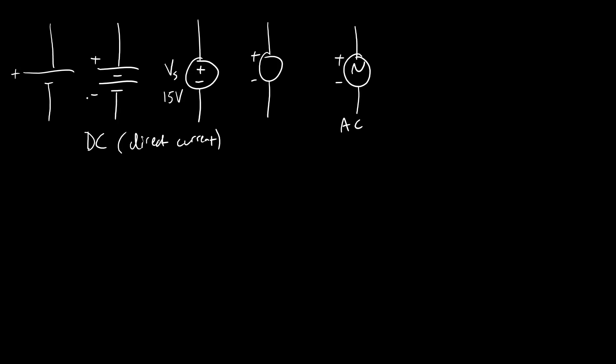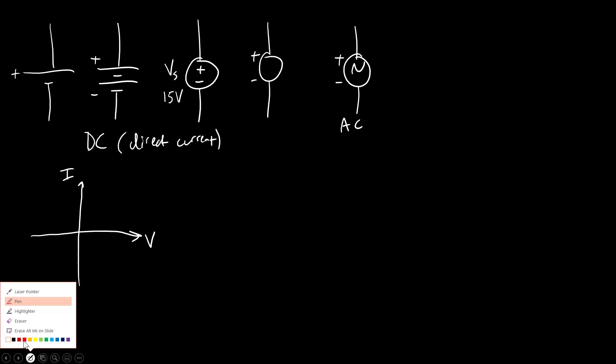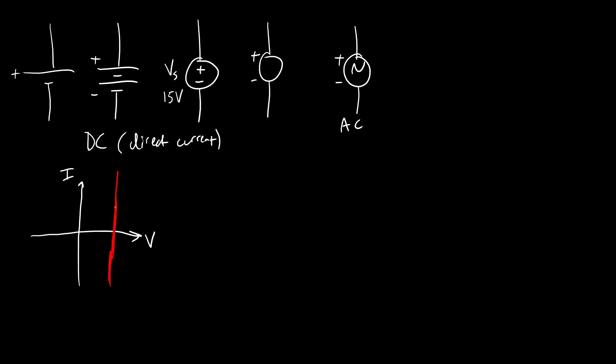In the ideal case, any of these DC voltage sources provides a constant voltage regardless of the load applied to it. So what that means is if we look at what is called an IV graph for this source - a graph of the current versus the voltage - regardless of the current drawn from or put into the source, this thing can provide a constant voltage VS.